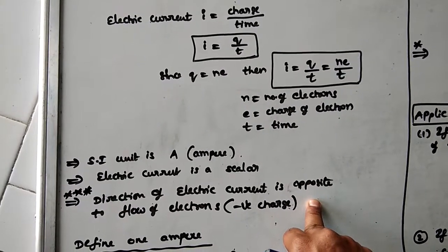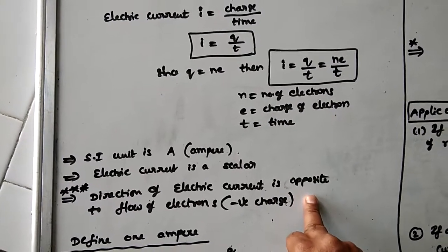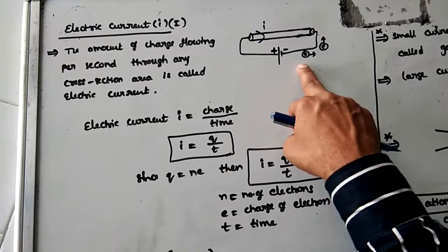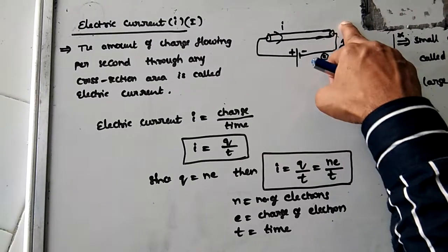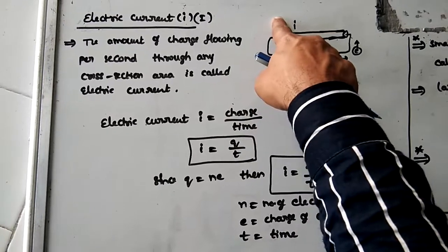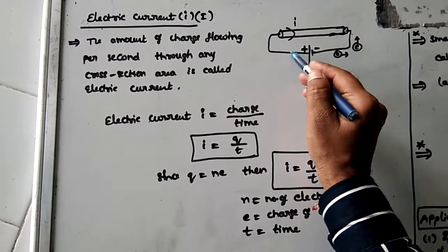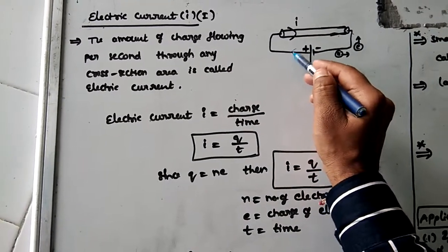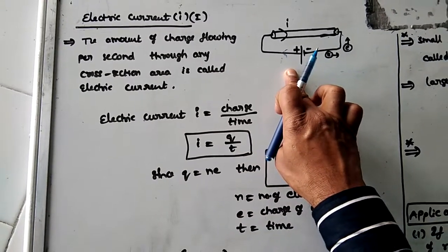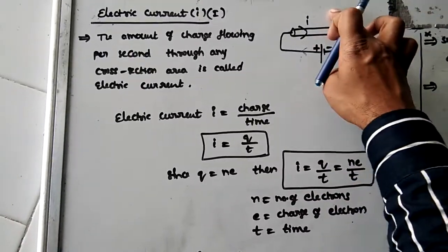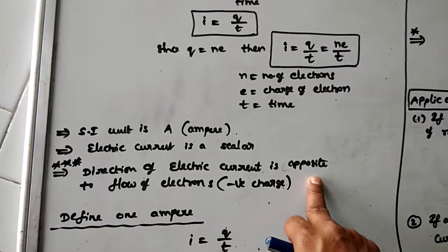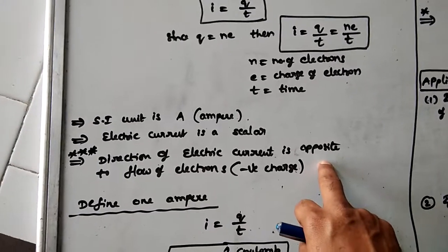This is very, very important: the direction of electric current is opposite to the flow of electrons. The direction of conventional current is opposite to the direction of electron flow. Electrons are moving in one direction, so conventional current flows in the opposite direction. Whenever a battery is taken, current comes out from the positive terminal, while electrons move in the opposite direction.